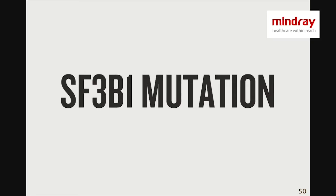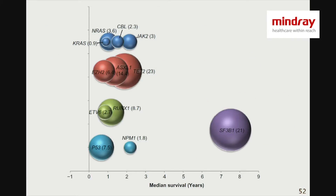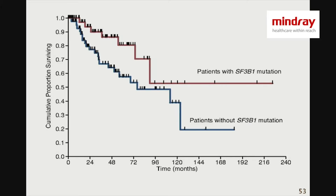So you resort to molecular studies. The molecular study in this situation is mutation in SF3B1. This is the splicing factor mutation that was identified in this gentleman. The median survival of patients who have SF3B1 mutation is 7 to 8 years, making this a relatively very low-risk MDS. As seen in the red curve, patients with SF3B1 mutation have a long survival.